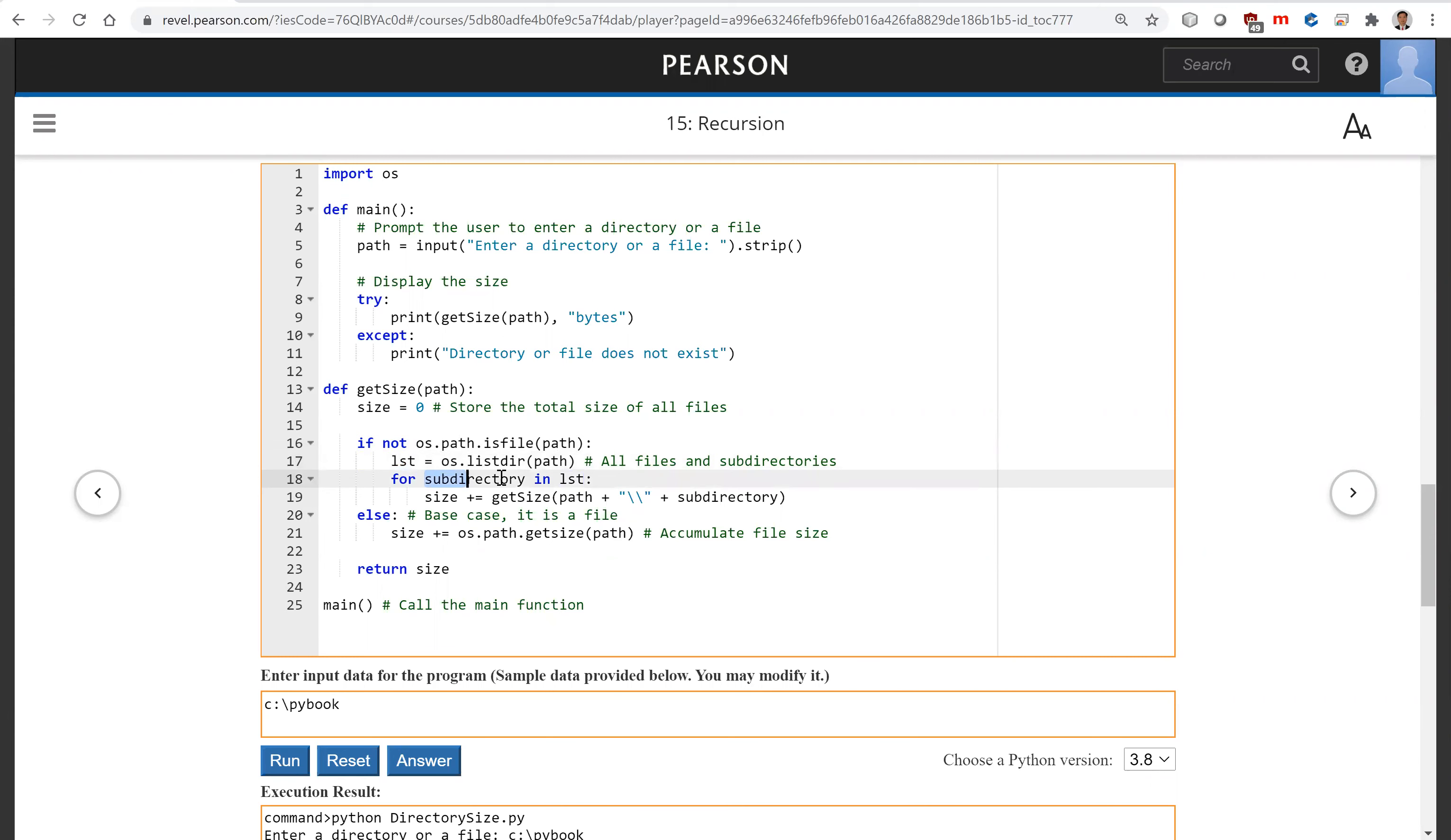And then for every subdirectory, we're going to find its size using getsize. Here is the subdirectory under this path. We're going to add it to the total size.